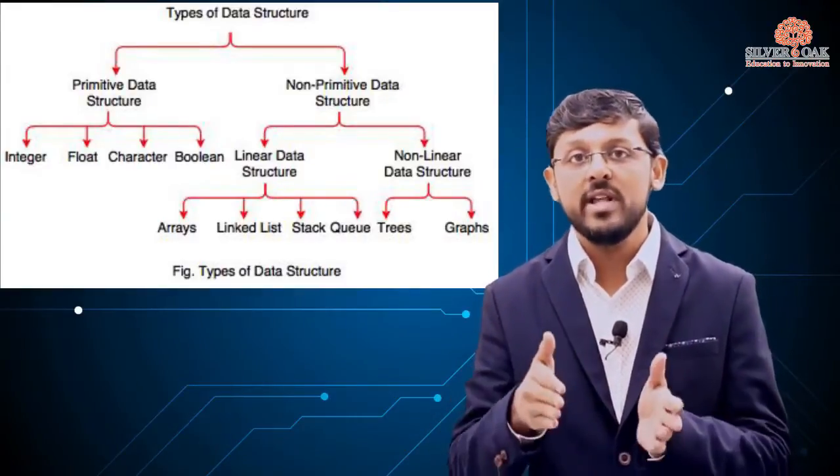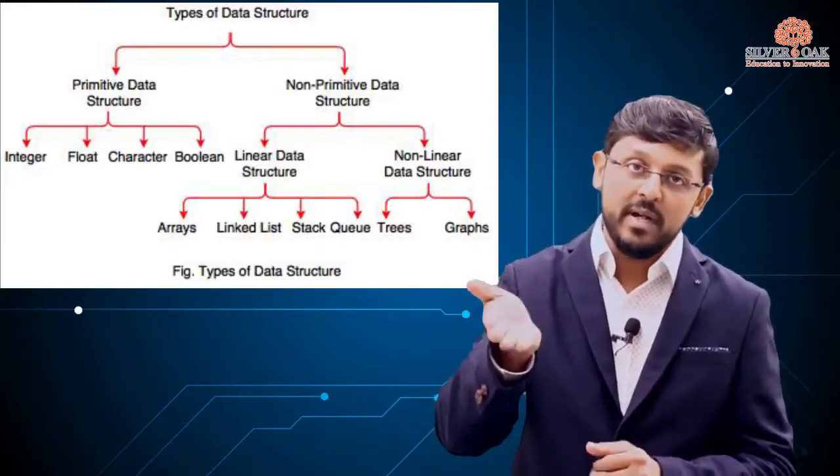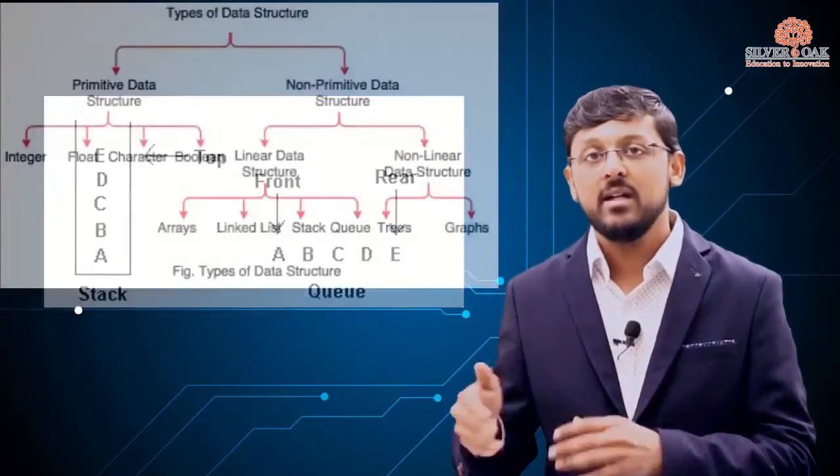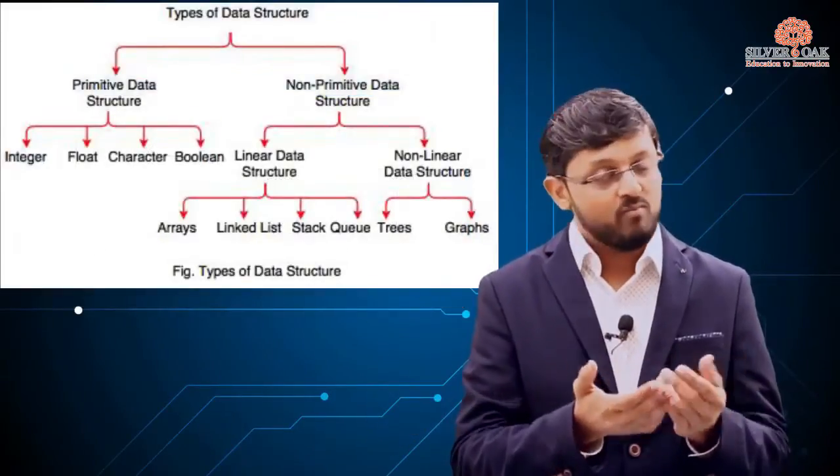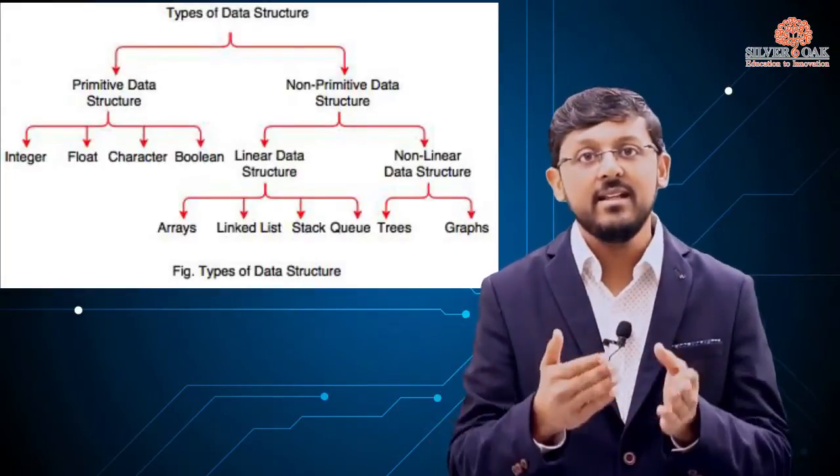Data in non-linear structures is stored in a random fashion. Now, talking about non-primitive linear data structures: arrays, stacks, queues, and linked lists. An array, as you know, is a fixed-size sequential collection of elements having the same data type.